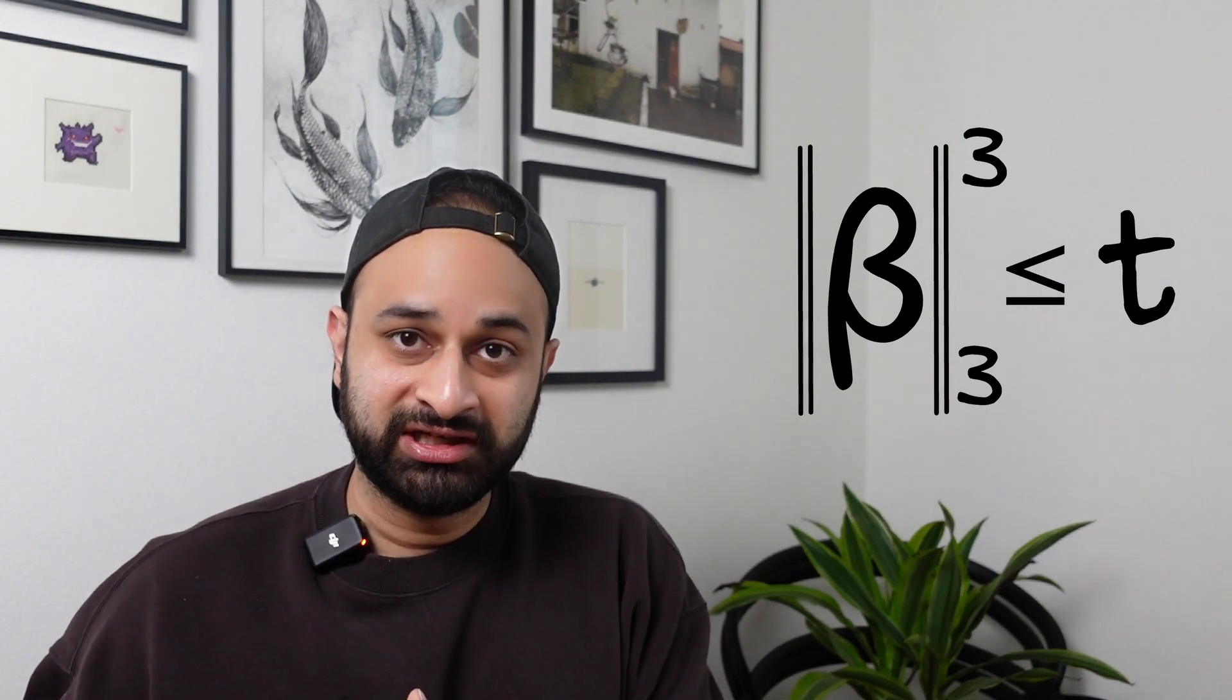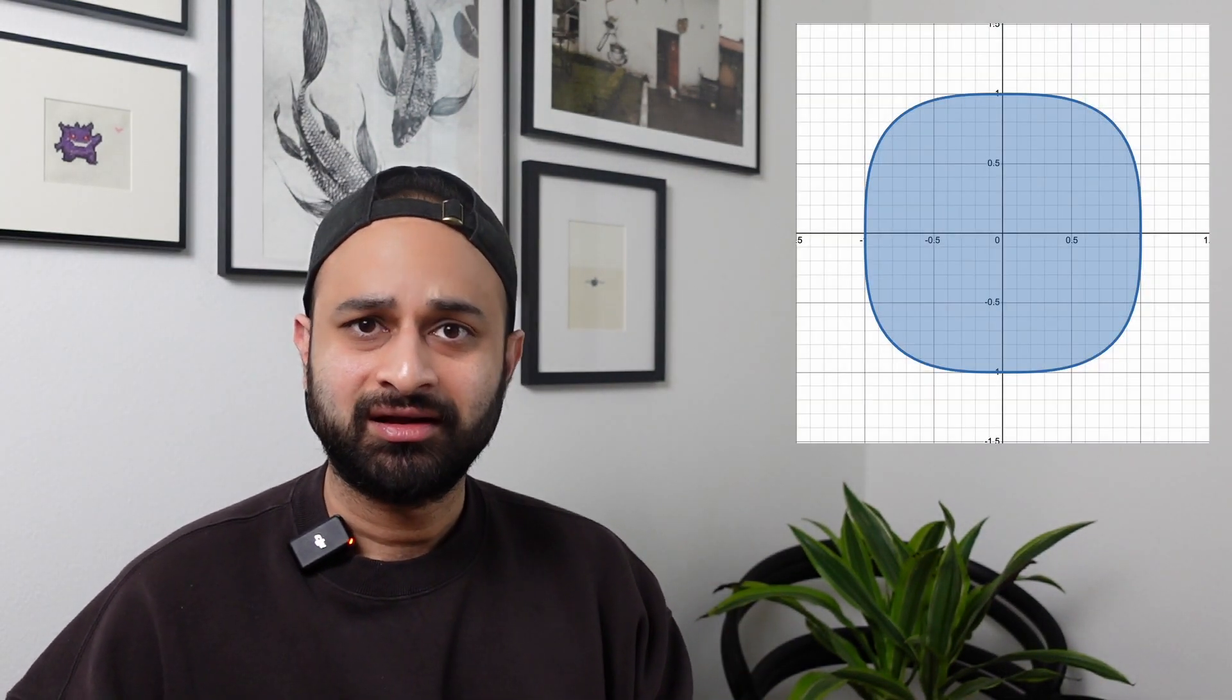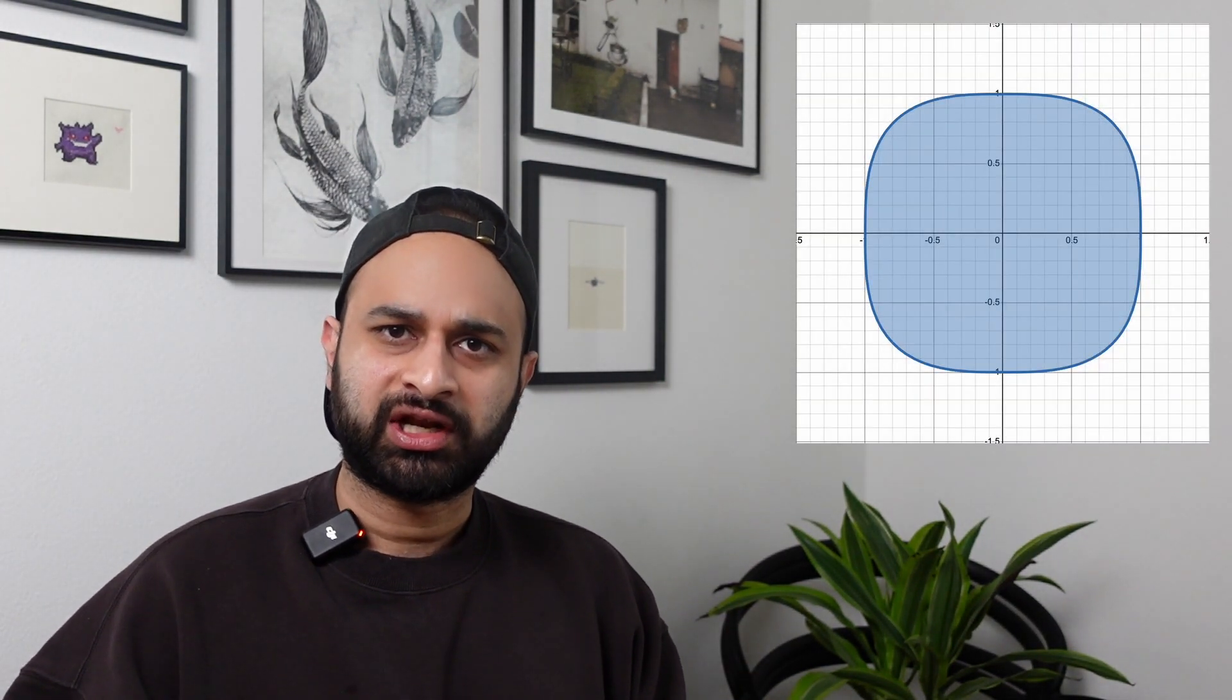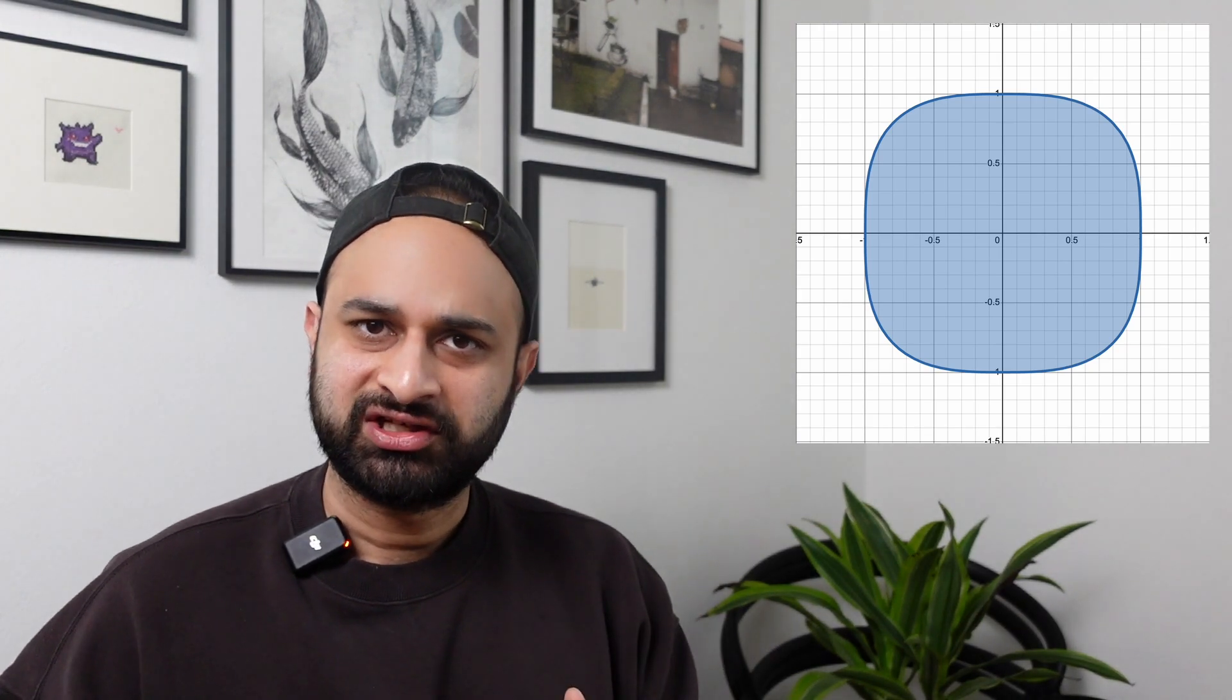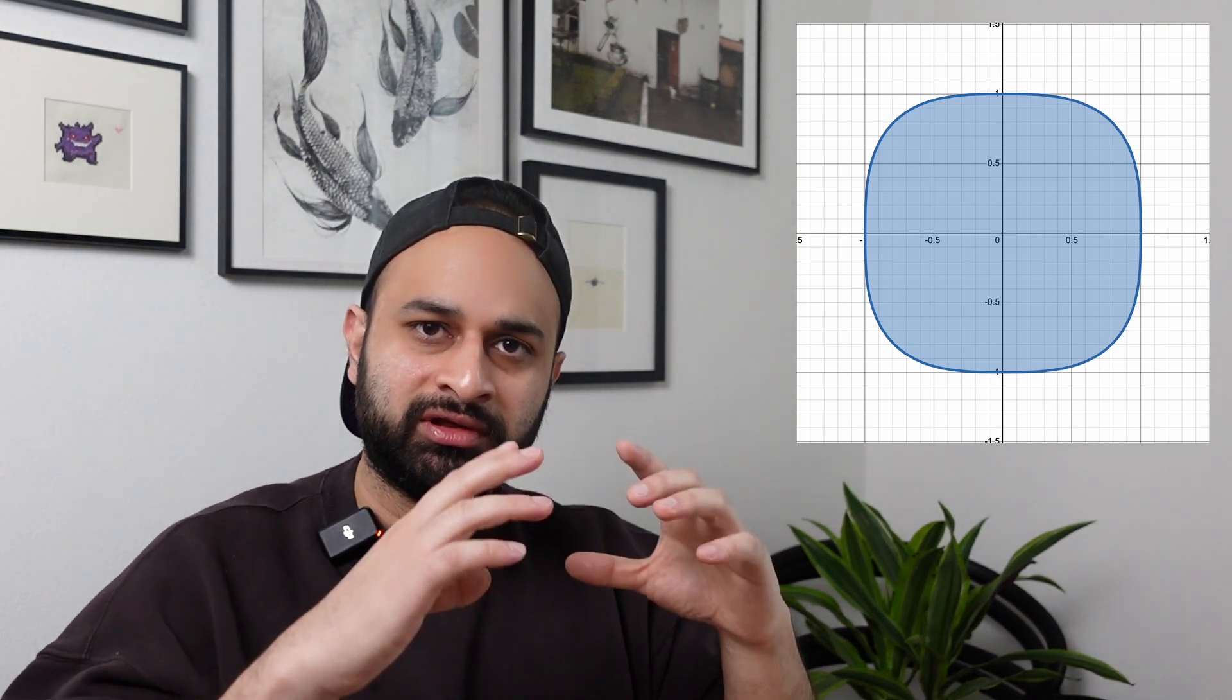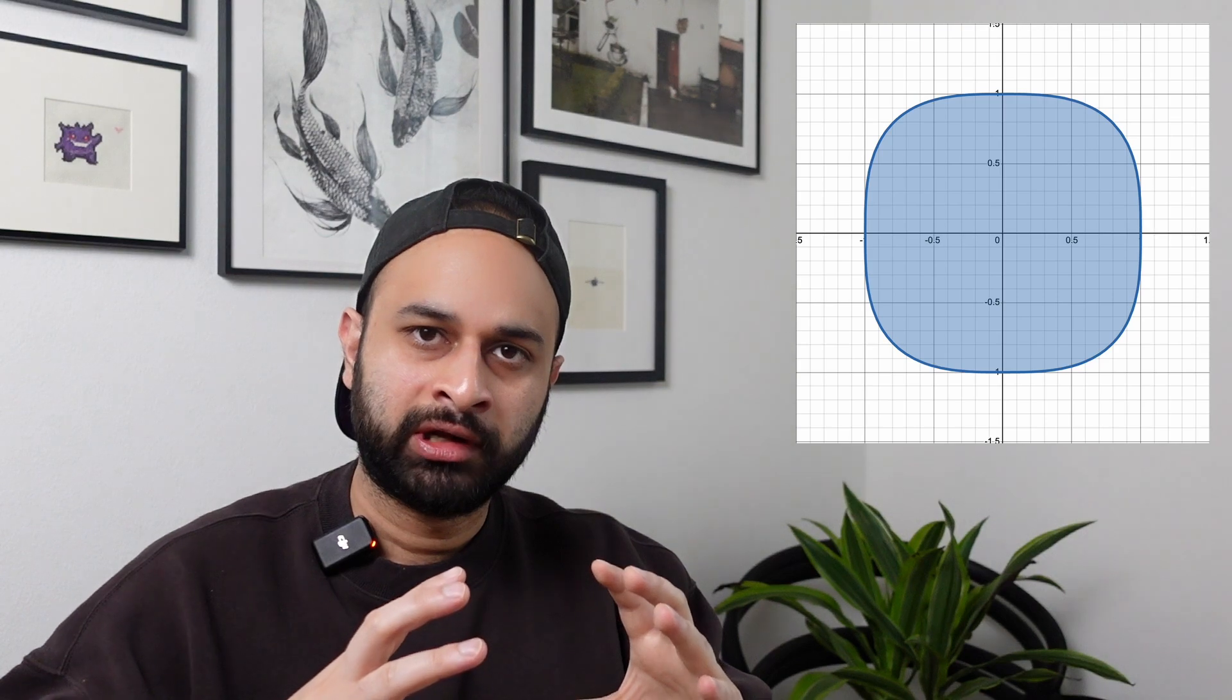We can definitely start by defining it mathematically because we know the mathematical forms for L1 regularization and L2 regularization. So all we need to do is stick threes everywhere we see ones or twos, and what we have is taking an L3 norm and setting that less than or equal to some number t. We'll just have that t be 1 for simplicity here.